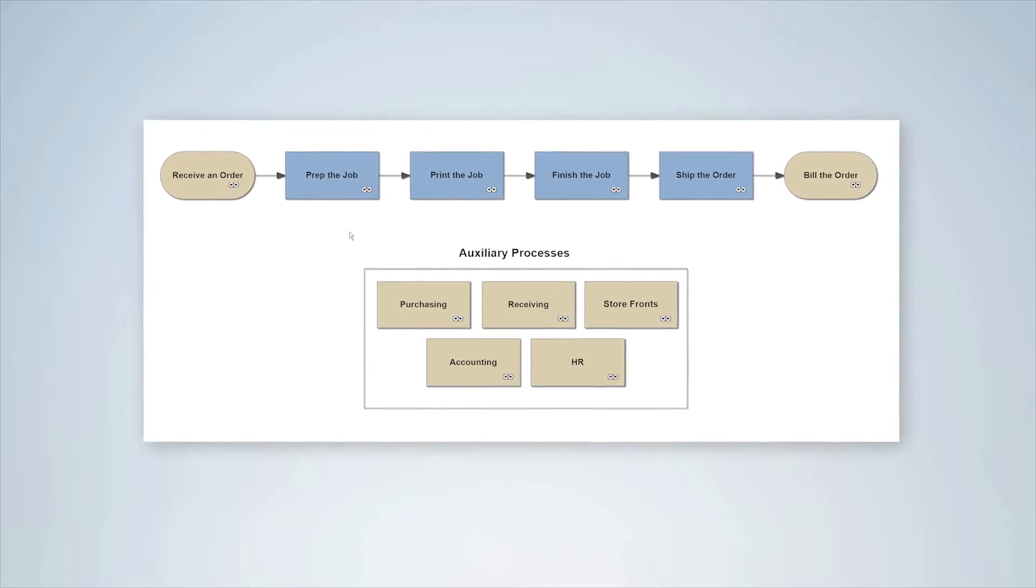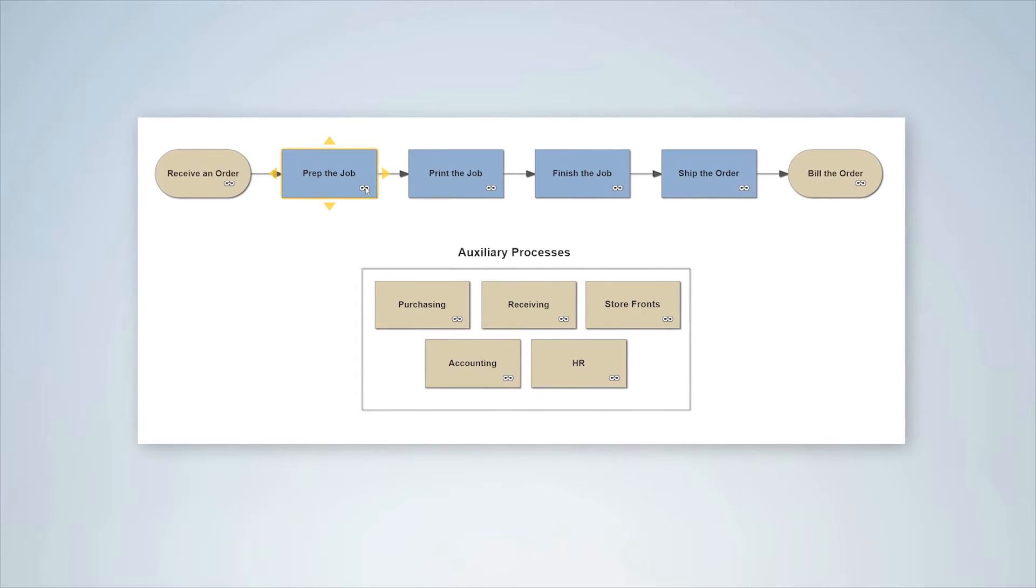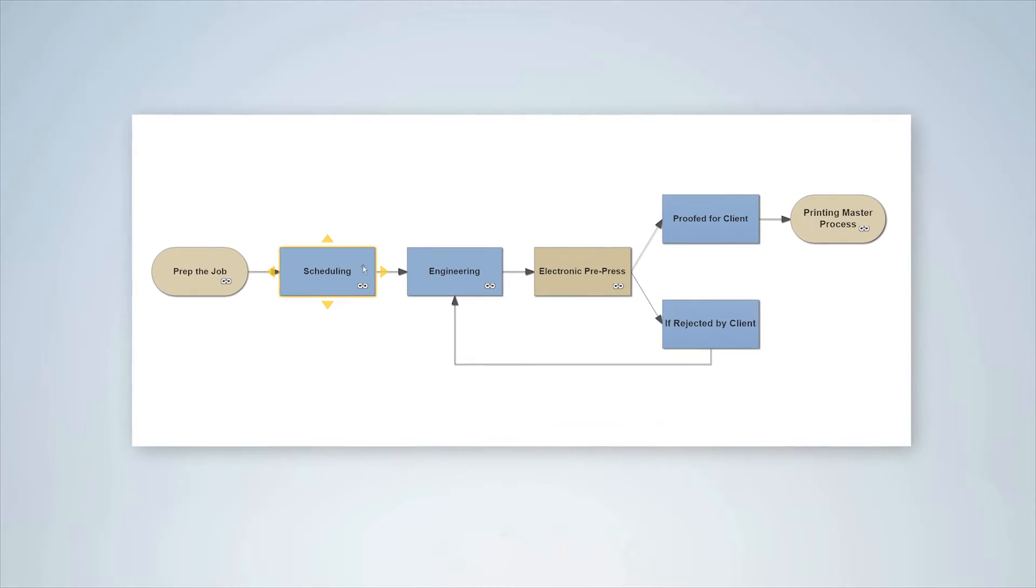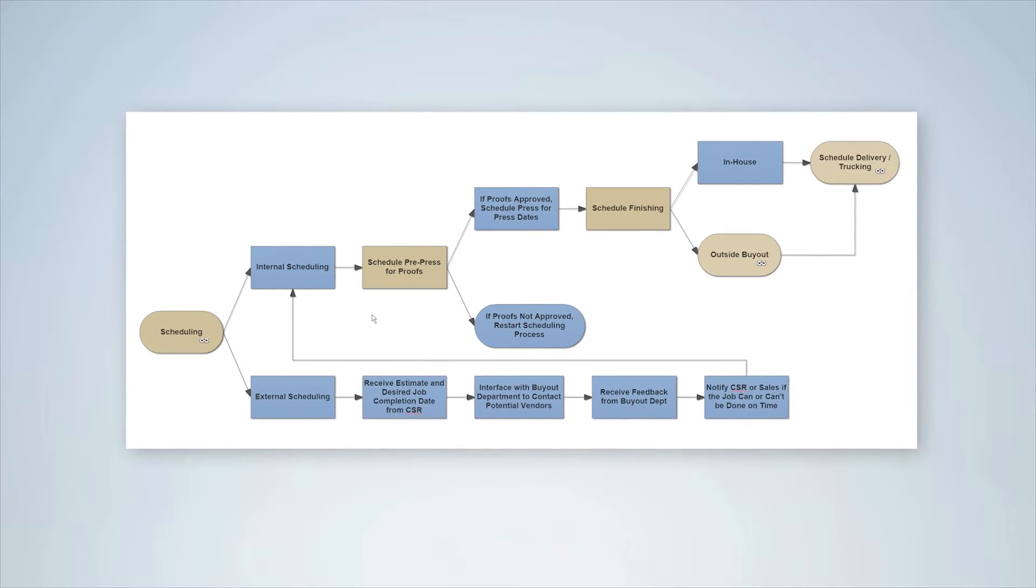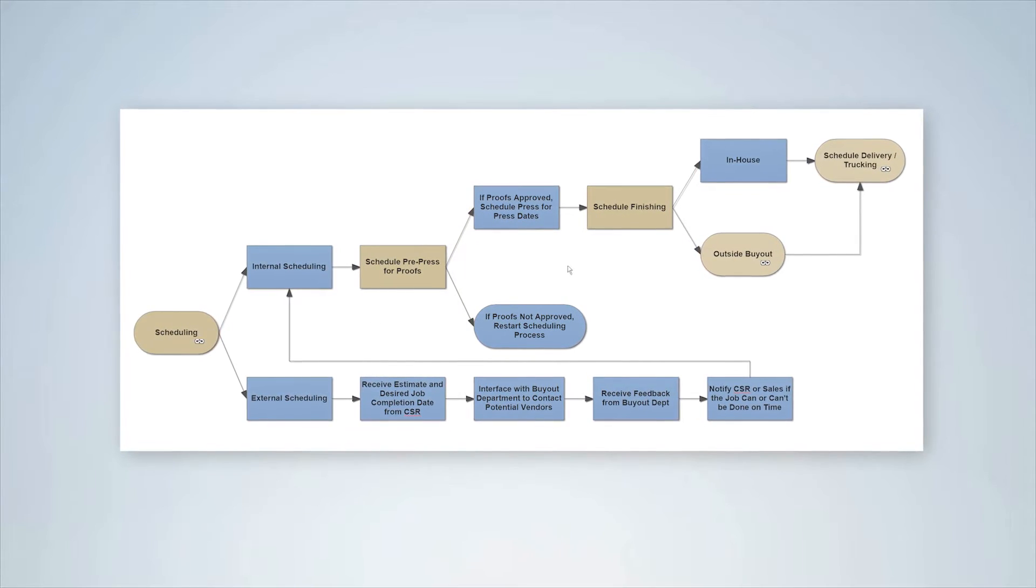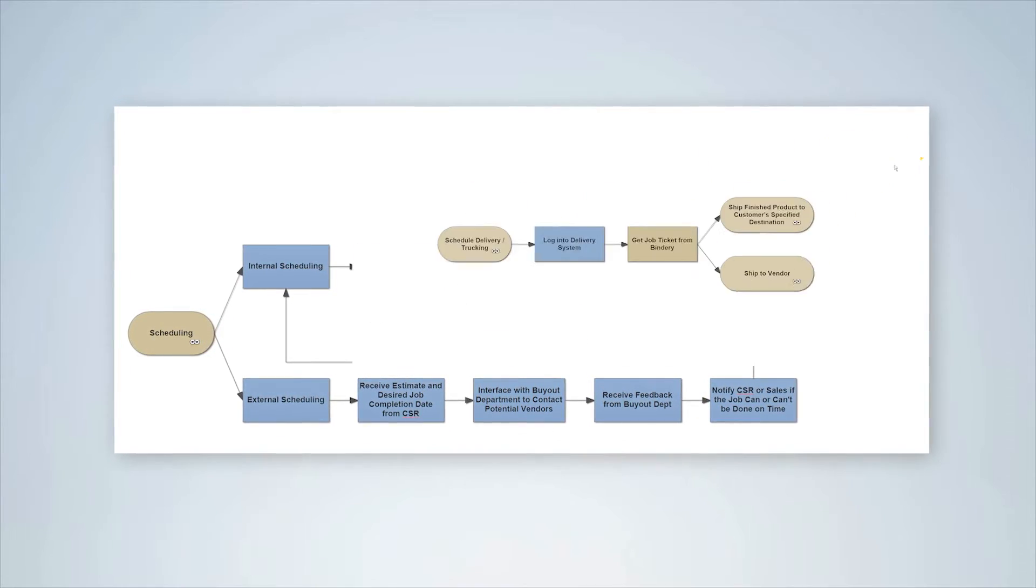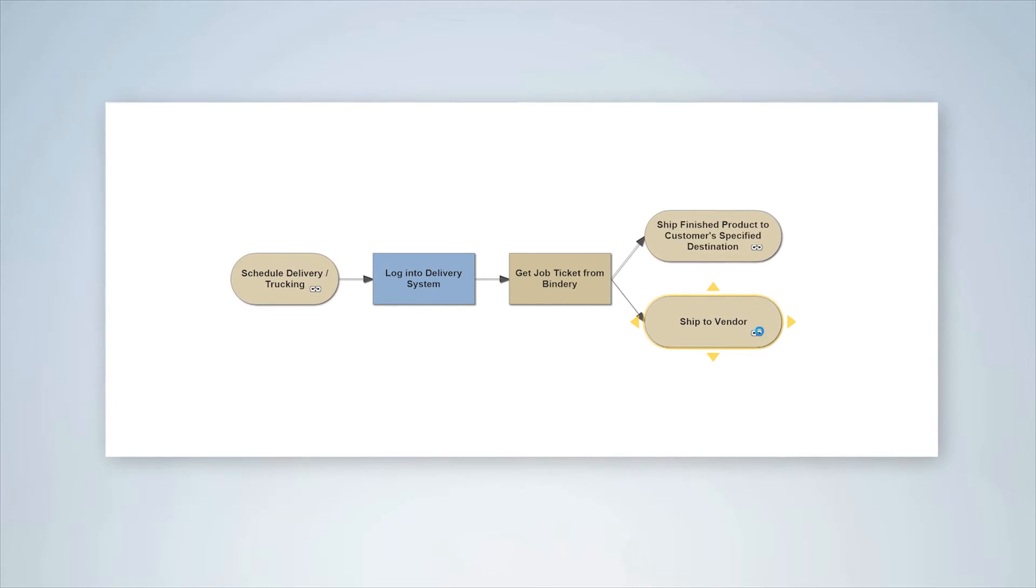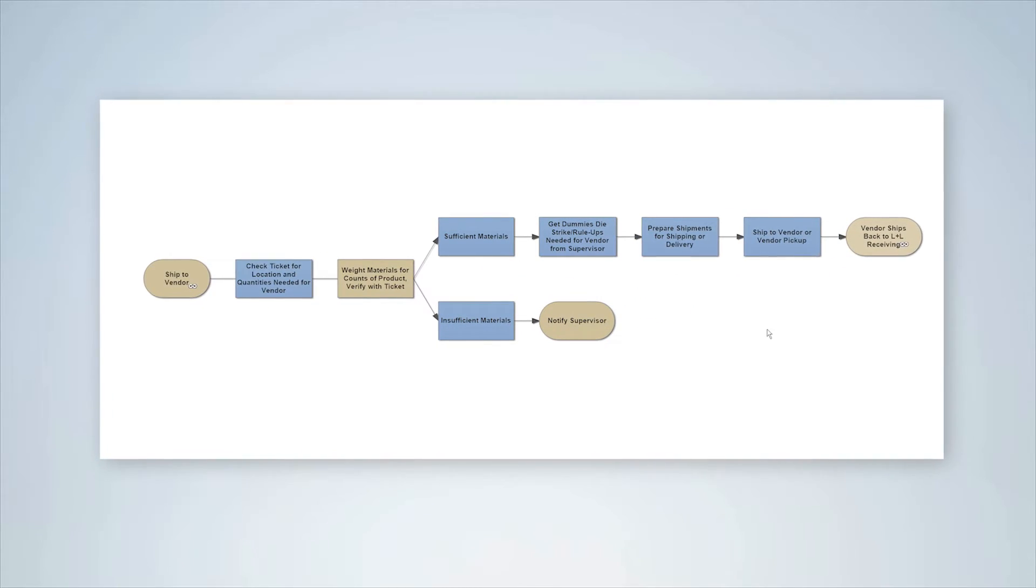Process documentation begins by identifying the small number of top-level master processes that are at the core of any organization. The remaining processes are then identified by systematically drilling down into the sub-processes from each master process.